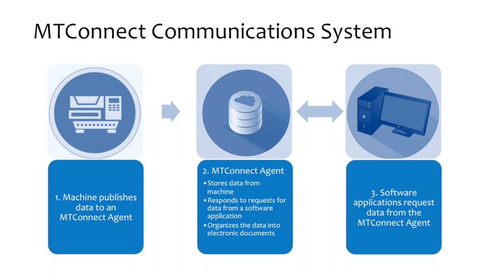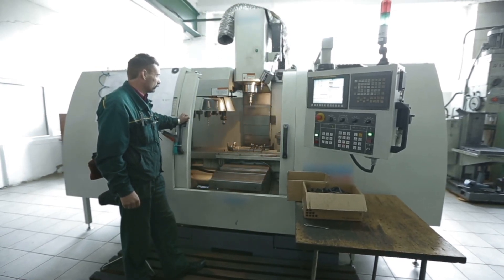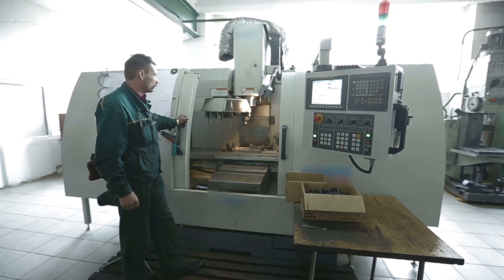It is important to have a basic understanding of the major components used to build an MTConnect system. The principal component of every MTConnect system is an MTConnect agent. The agent provides the critical link between a piece of equipment and client software applications, performing several tasks within the MTConnect system. Two major functions provided by the agent are the collection, organization, and storage of data published from one or multiple pieces of equipment, and to respond to requests for this data from client software applications. In an MTConnect system, the term 'a piece of equipment' can represent any intelligent data source that can produce data.